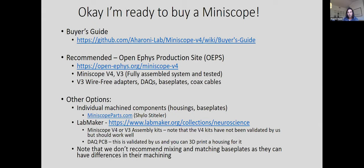Shiloh also helps if you have a custom need — he has a lot of experience building custom components around the mini scope. You can always reach out to him, and he even sells some custom parts that other labs have asked him to build that ended up being really useful and get picked up on the website as well. So miniscopeparts.com is a great place to get the parts you need.